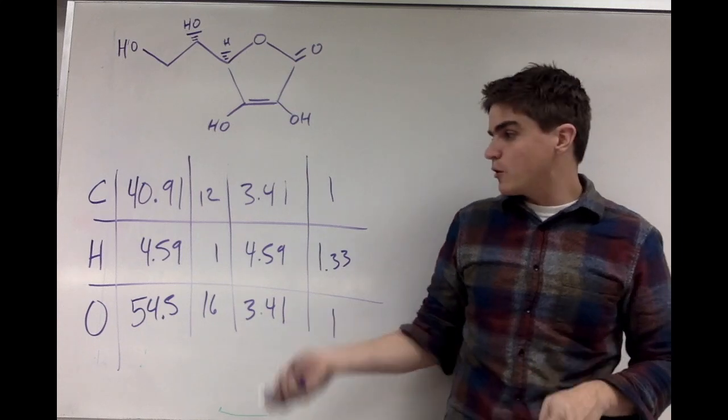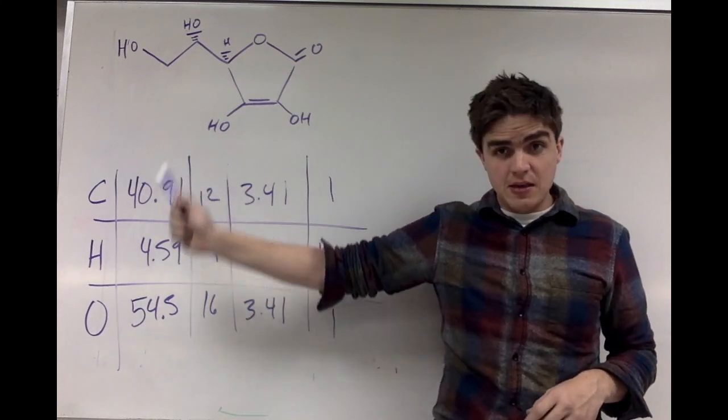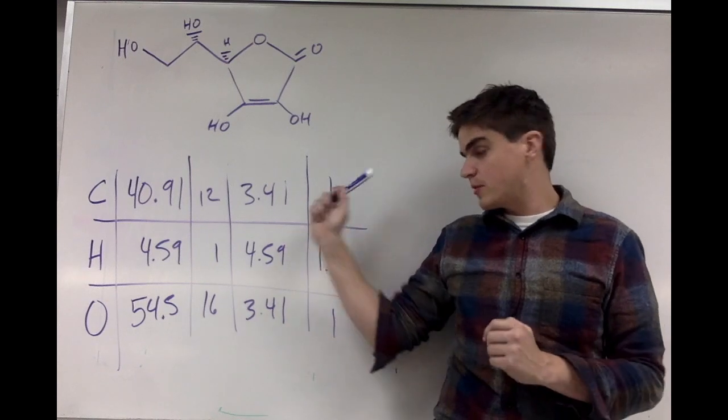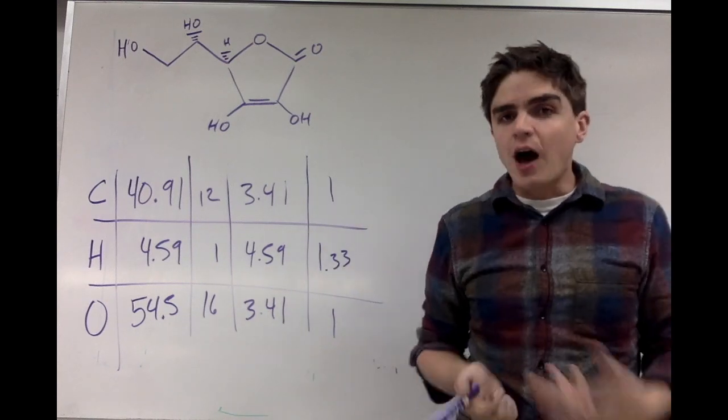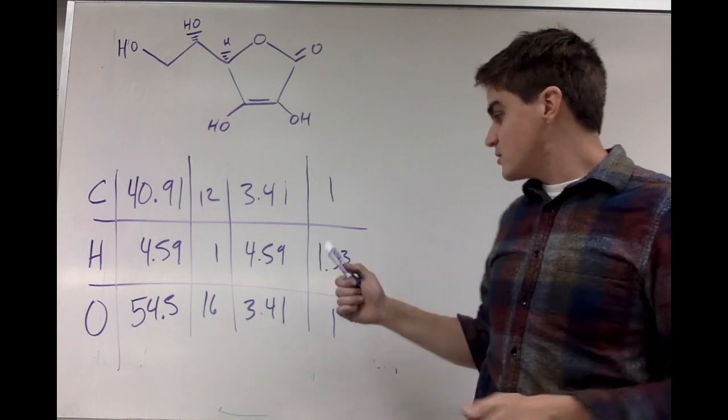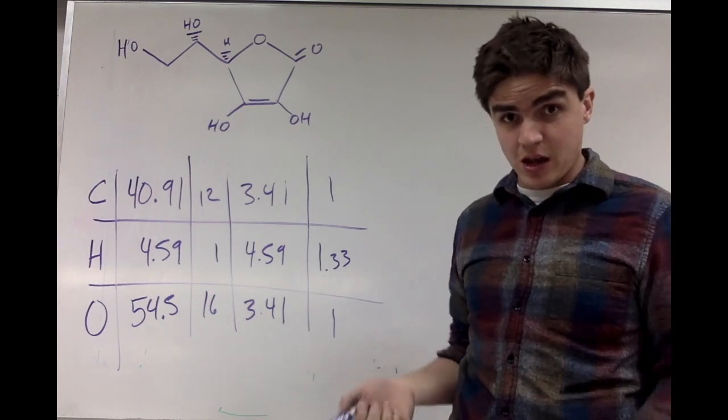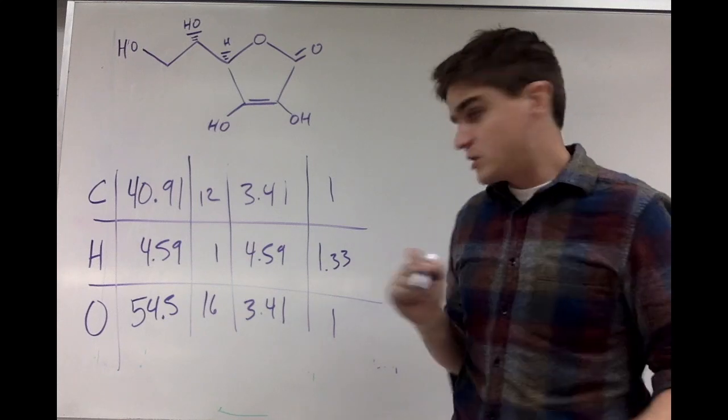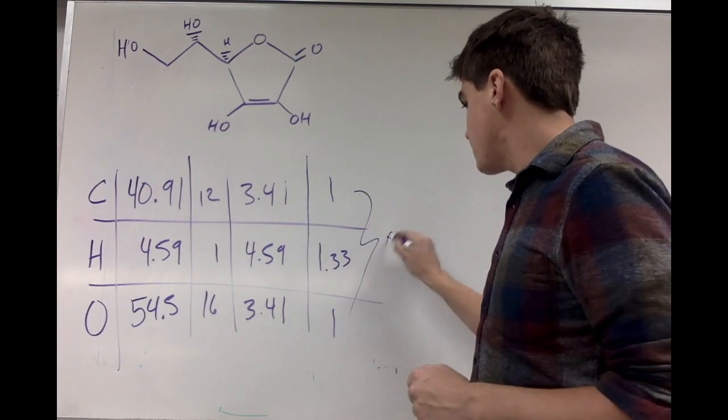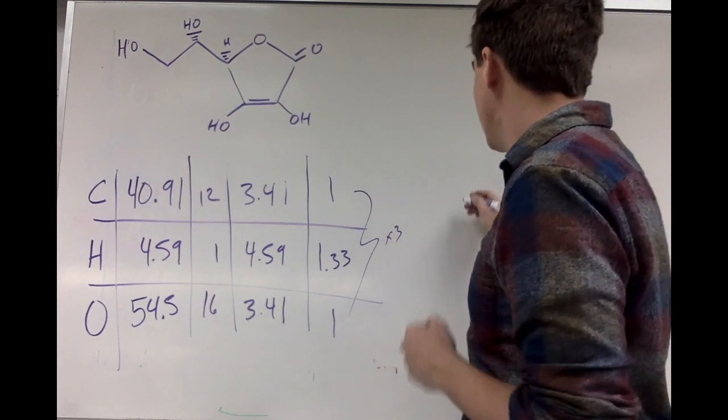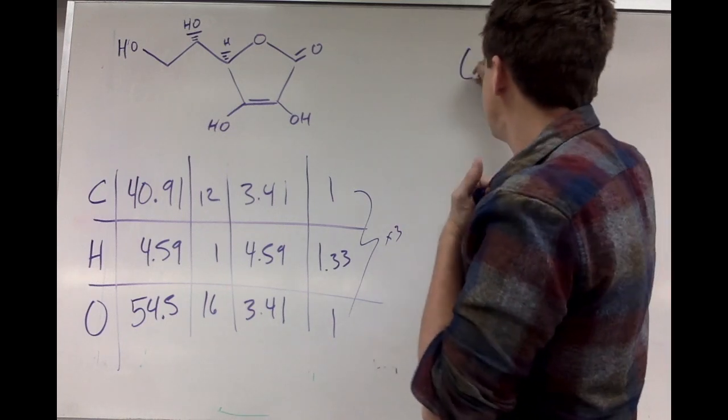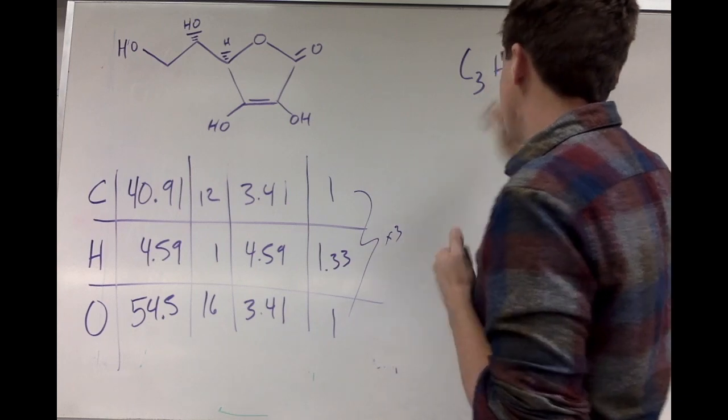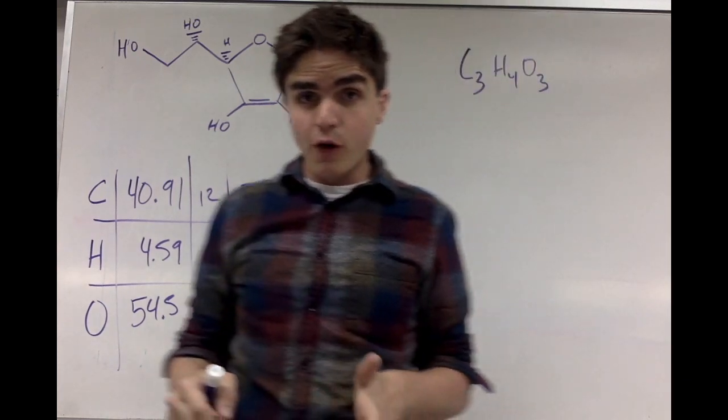All right. Now, I've come to a problem. I've done the empirical formula. I've taken the grams given divided by the molar mass, gotten a ratio divided by the smallest number. I got 1, 1.333, and 1. Obviously, these aren't a whole number ratio. I need to make this a whole number. The only way to make 0.33 a whole number is to multiply by 3. I'm going to take this whole thing and multiply it by 3. So I need to get an empirical formula of C3H4O3. That's my empirical formula.